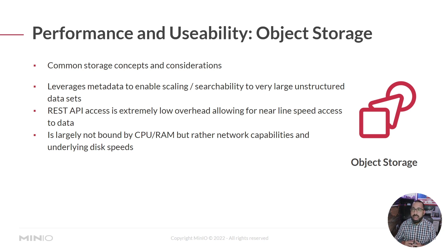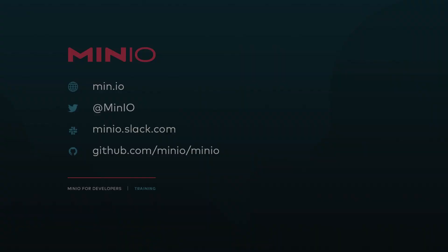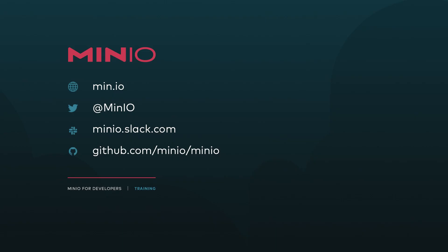Object storage is largely not bound by CPU and RAM, but rather by network capabilities. Many other protocols require you to add CPU and memory as you scale out storage, but object storage typically does not work that way. This can really reduce the overall hardware you need to run at very high disk speeds and store large amounts of data.